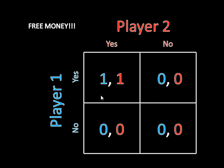But if player two is playing yes as a pure strategy, that means player one is unwilling to mix between yes and no, because if he mixes, some percentage of the time he's getting one and some percentage of the time he's getting zero — and he'd rather just get one all the time. So player one can't mix, player two can't mix, which means there aren't any other Nash equilibria beyond the two we've found.